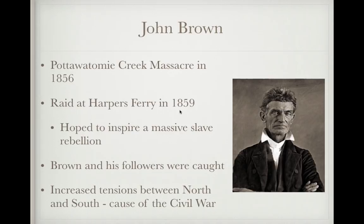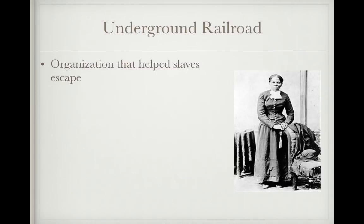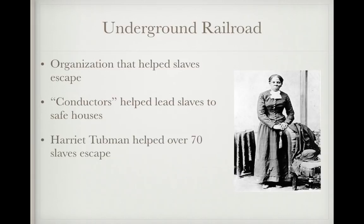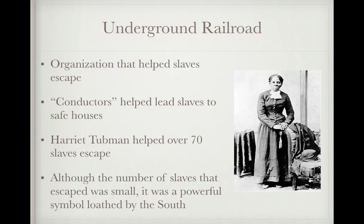The Underground Railroad was an organization that helped slaves escape. Conductors were people who helped lead slaves to safe houses. Harriet Tubman helped over 70 slaves escape, including her parents and herself — she was a former slave. Although the number of slaves that escaped was small, the Underground Railroad was a very powerful symbol that was loathed by the South and gave hope to many slaves.